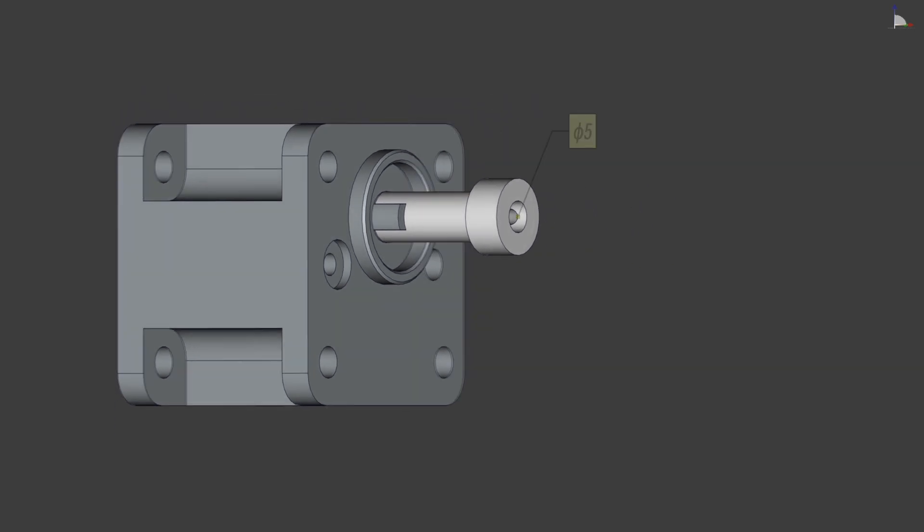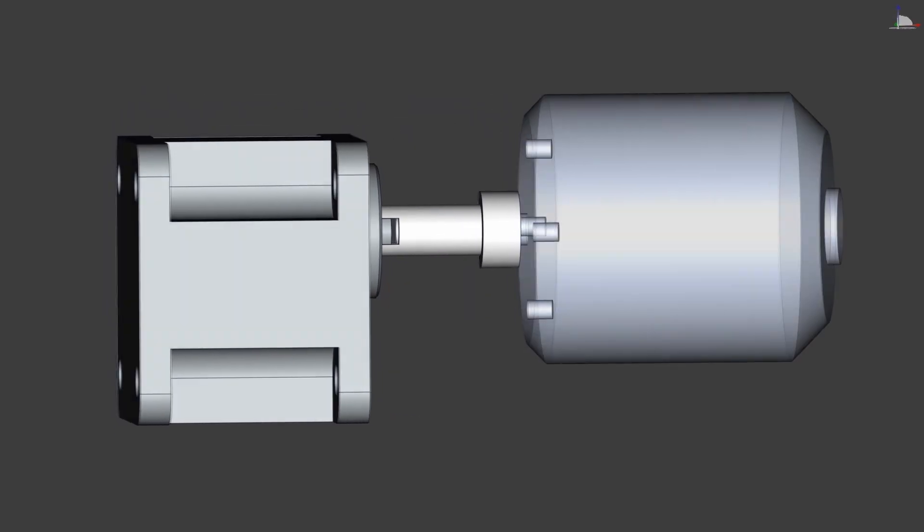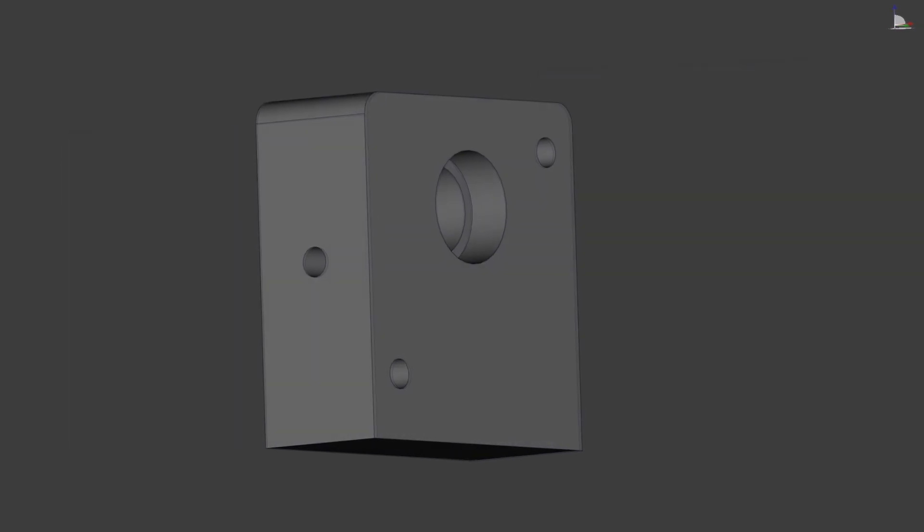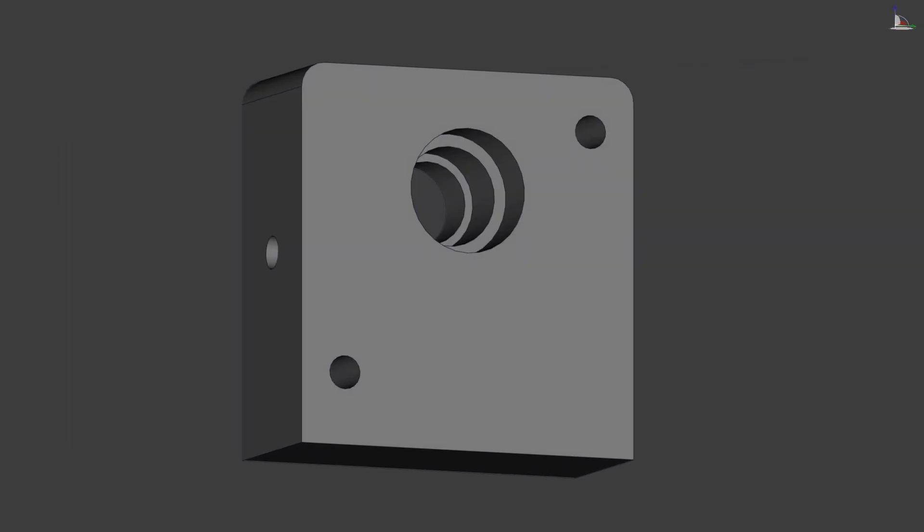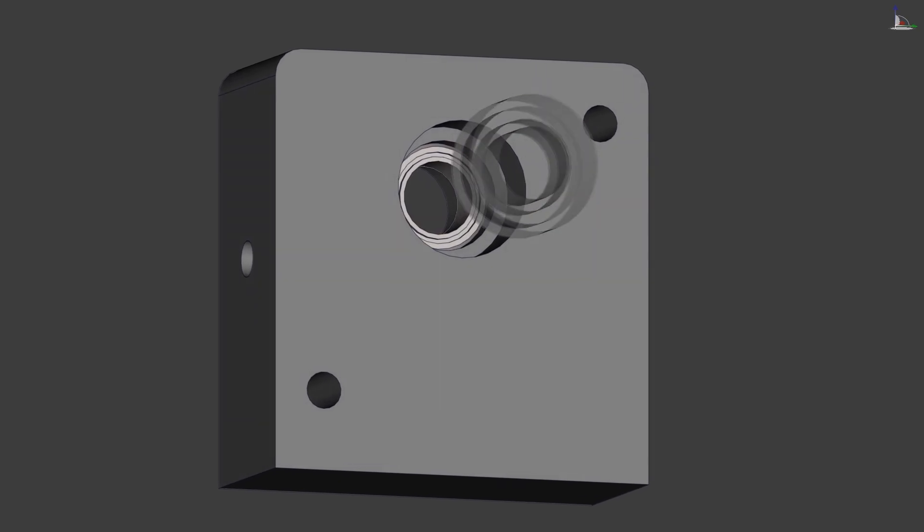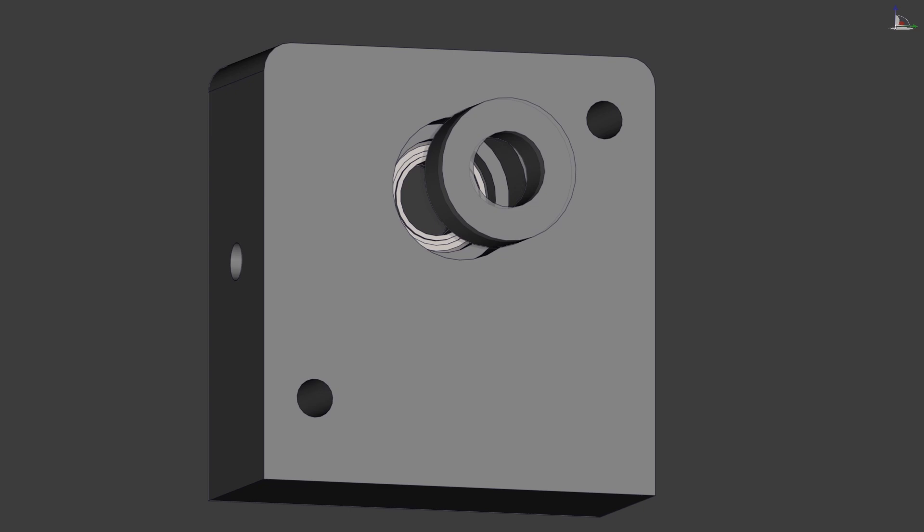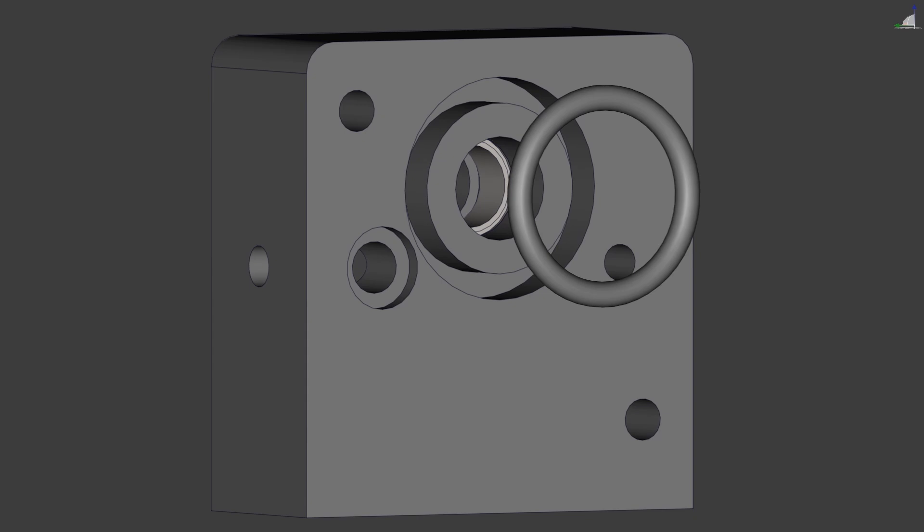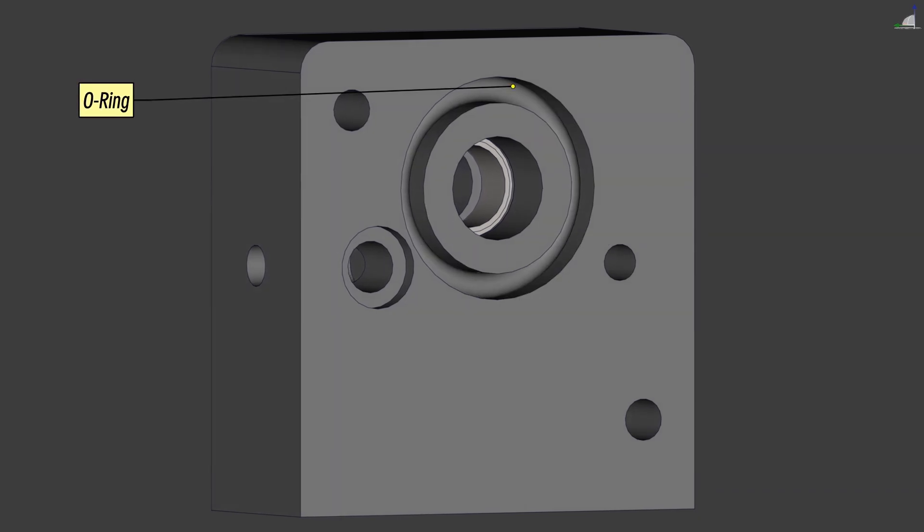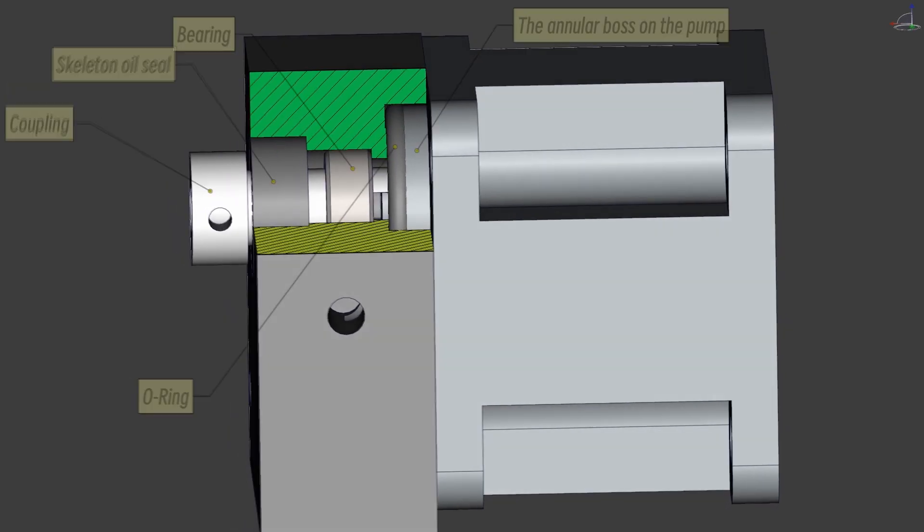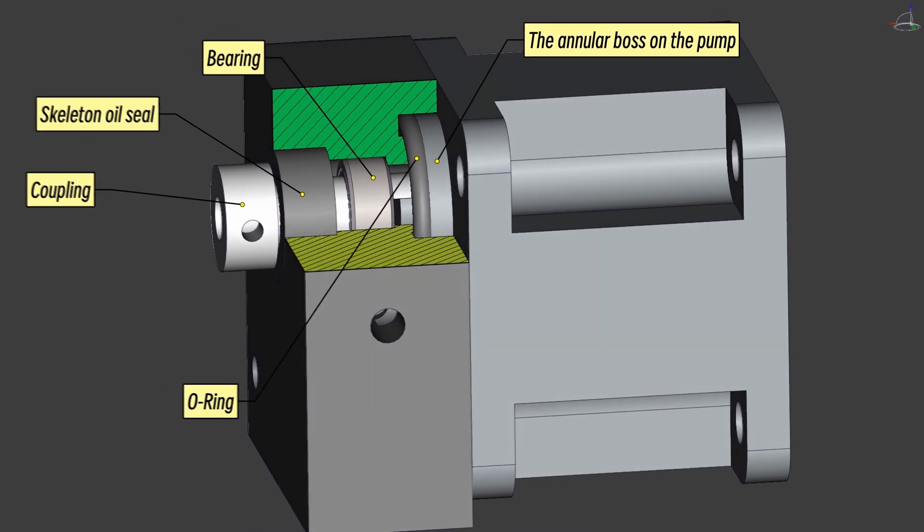The center of the coupling has a shaft hole to connect to the drive motor. The other side of the bore also has a stepped structure. The inner layer has a smaller diameter and is for a bearing, while the outer layer has a larger diameter and is used to place a micro oil seal. The circular groove concentric with the through hole is for an O-ring, which will fit tightly against the annular boss on the pump's end cap to create a seal.